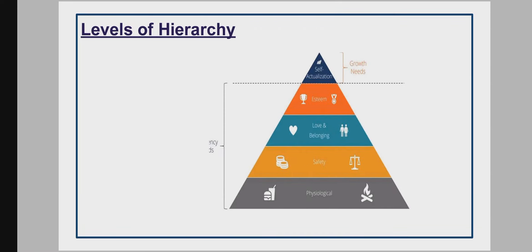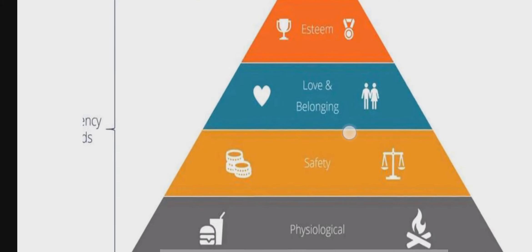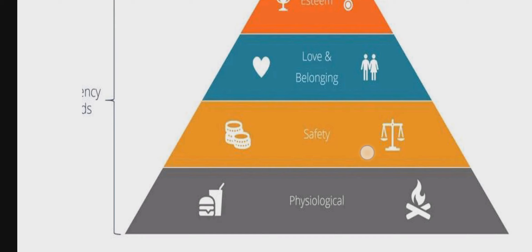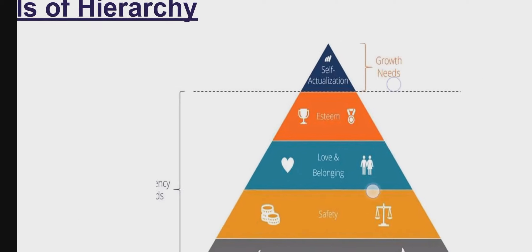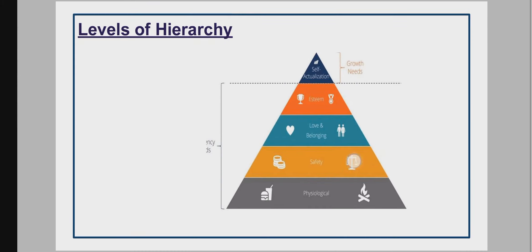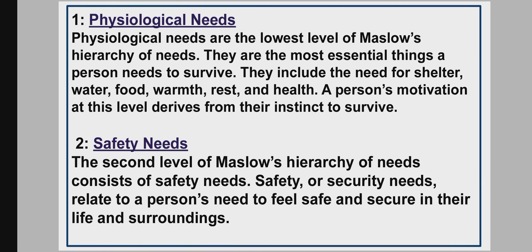The pyramid of the hierarchy of needs consists of five levels: Physiological, Safety, Love and Belonging, Esteem, and Self-Actualization. Physiological needs are the lowest level of Maslow's hierarchy. They are the most essential things a person needs to survive, including shelter, water, food, warmth, rest, and health. A person's motivation at this level derives from their instinct to survive.